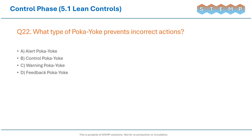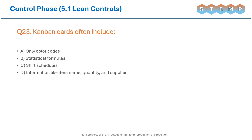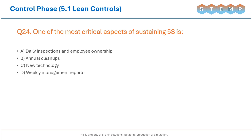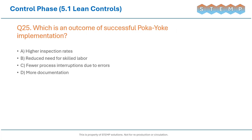What type of Poka-yoke prevents incorrect actions? Kanban cards often include? One of the most critical aspects of sustaining 5S is? Which is an outcome of successful Poka-yoke implementation?